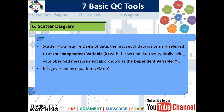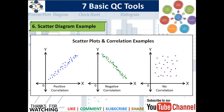The Scatter Diagram requires two different sets of data or variables: one is the independent variable X and the other is the dependent variable Y. They are related to each other by the equation Y = mX + C, where C is the constant and m is the slope. Examples shown on screen include: on the left, a very positive correlation where dots are very close together and the slope is positive; in the middle, a negative correlation showing an inverse relationship; and on the far right, no correlation between the two variables.